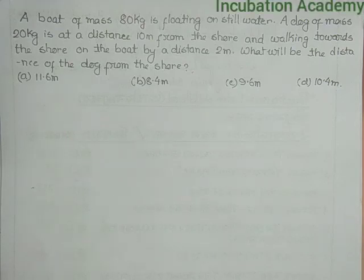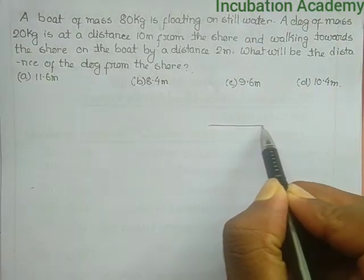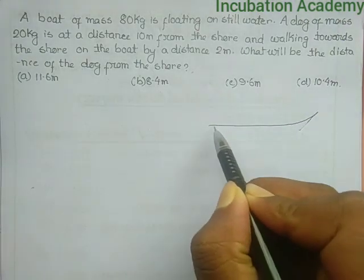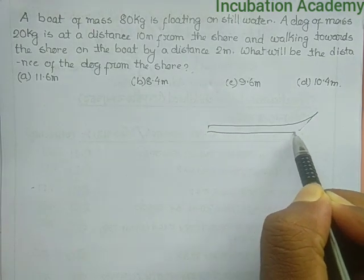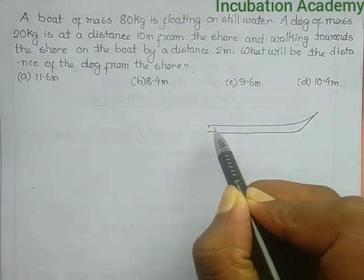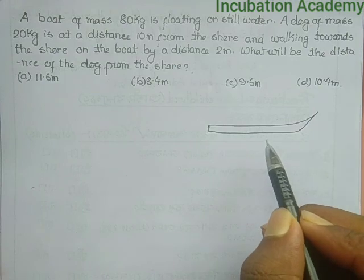Welcome everyone. The question is: a boat of mass 80 kg is floating in still water. So it is something looking like this. Since it is floating in still water, obviously no external forces are acting on it, and its mass is 80 kg.